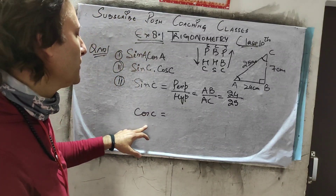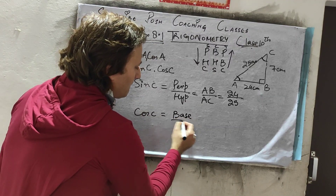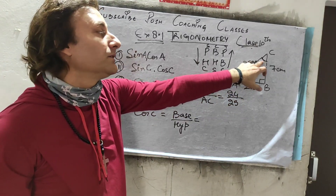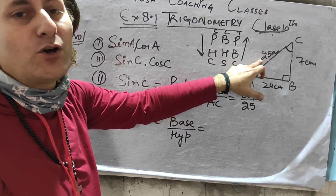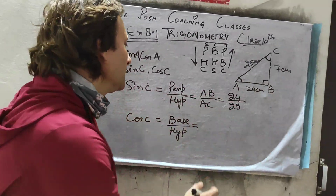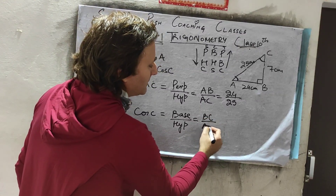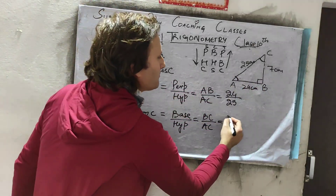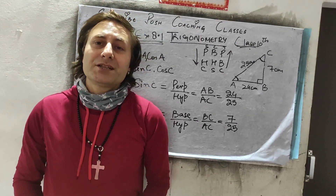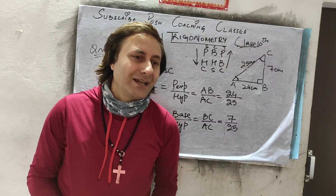For cos C, cos equals base upon hypotenuse. When the angle is at C, the perpendicular is AB and the hypotenuse is AC, so the base is BC. Therefore cos C = BC upon AC, which is 7/25. That completes question number 1 — I hope everybody is clear with it.